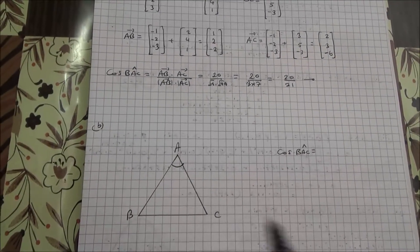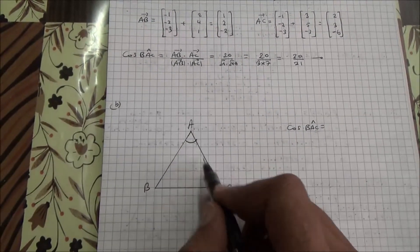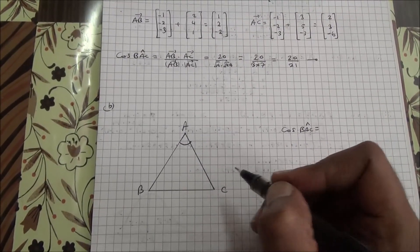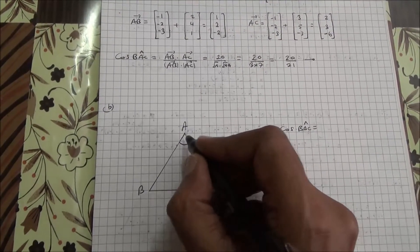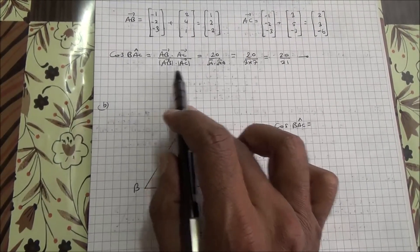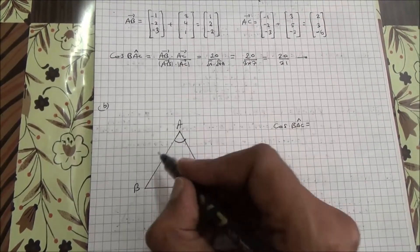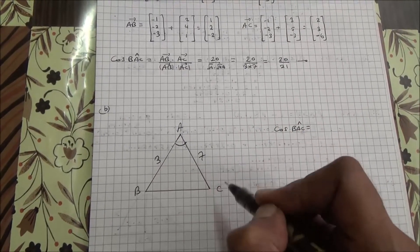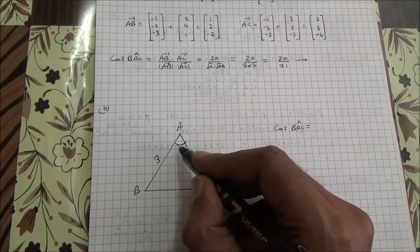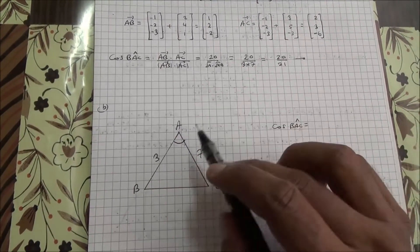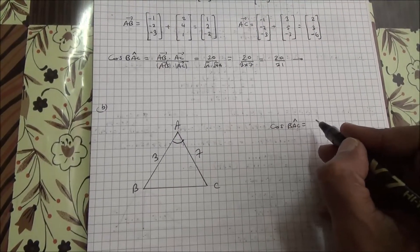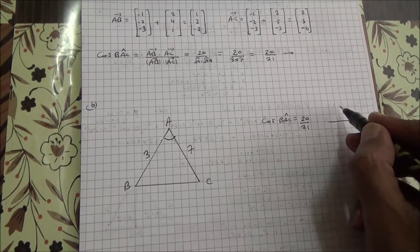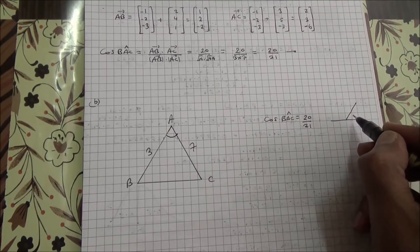For the second part, we need to find the exact value of the area of triangle ABC. Suppose this is a rough illustration of ABC. We know that AB is root of 9, which is 3, and AC is 7. We have the cosine of angle BAC as found earlier, which was 20 over 21.